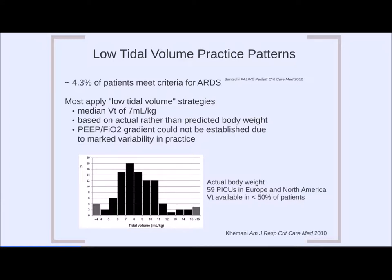This study covered 59 pediatric ICUs across Europe and North America. Importantly, tidal volume data was available in fewer than 50% of patients — calling yourself a 'low tidal volume' strategy while only reporting tidal volumes in less than 50% of patients is simply not acceptable. This brings up a critical point: when evaluating mechanical ventilation trials, always go to the methods section to determine the actual settings used. A great mode set improperly can lead to poor results — that reflects poor settings, not a bad mode.